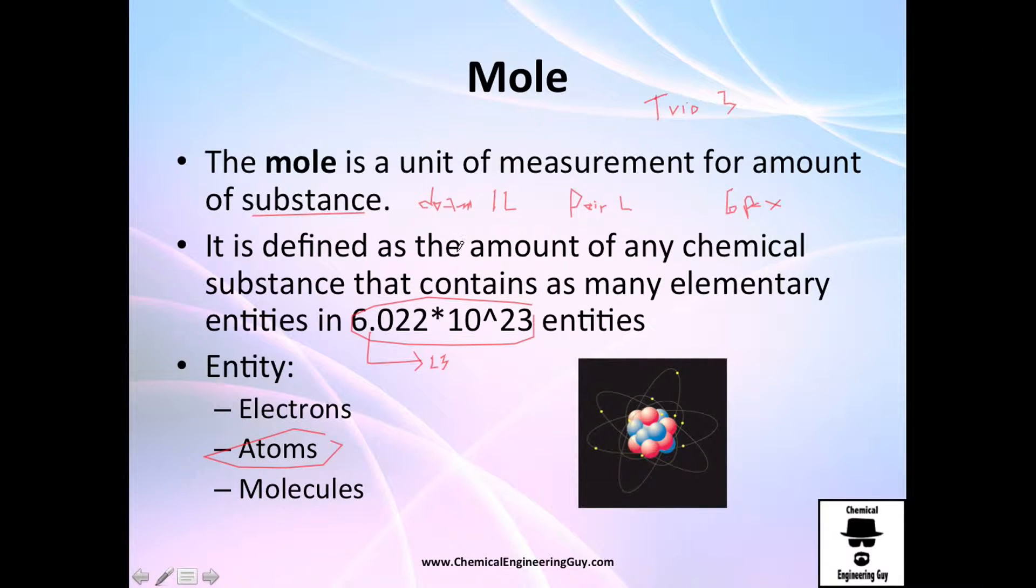So why do we choose this? Because for example, one mole of, let's say, hydrogen gas is about two grams. And what do we have in these two grams? We have actually 6.022 times 10 to the 23 molecules of hydrogen in that two grams, which is awesome.